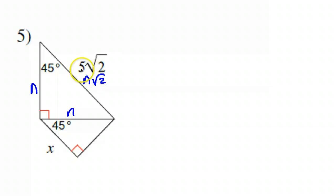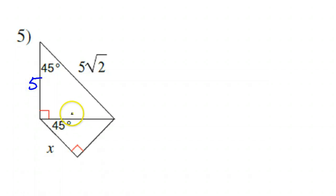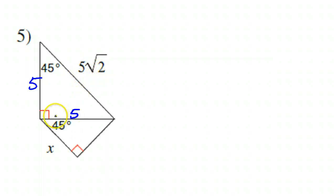Comparing these two to each other, obviously N is five. So if the hypotenuse here is five radical two, then these legs must be five — because it must be like five, five, five radical two.